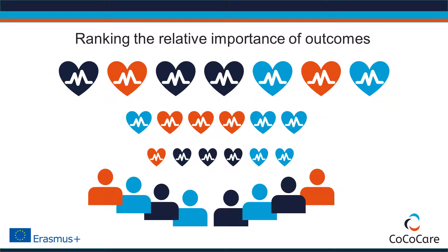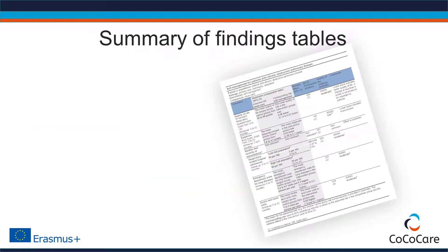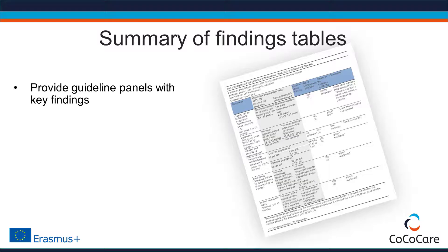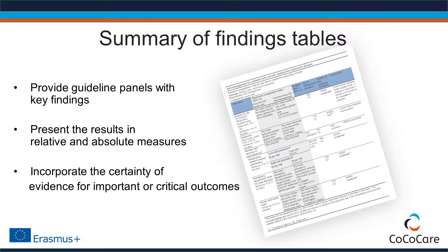It is also important to remember that the relative importance of outcomes might vary for subpopulations. To summarize the evidence and the certainty of evidence, GRADE uses Summary of Findings tables. These tables provide guideline panels with key findings, present results in relative and absolute measures, and incorporate the certainty of evidence for important or critical outcomes.